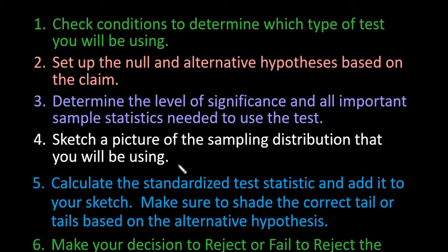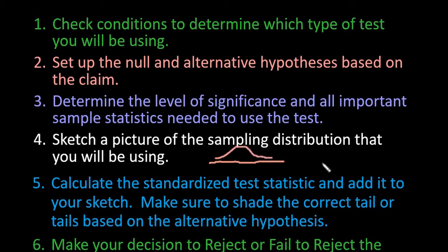Your next step is to sketch a picture of the sampling distribution that you will be using. For the classes that I currently teach, that will be either the normal model or the t model, so it would just be a bell-shaped curve. If you are doing a chi-square test, then your chi-square would be a skewed right distribution. The sampling distribution is just — what are you using? Are you using a normal model? Are you using a t model?